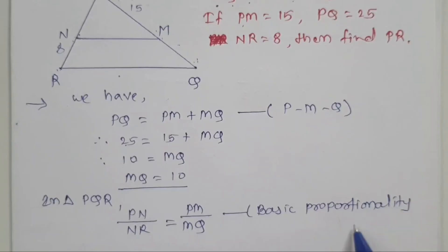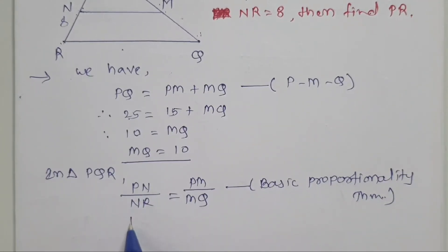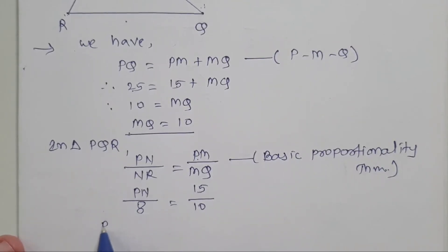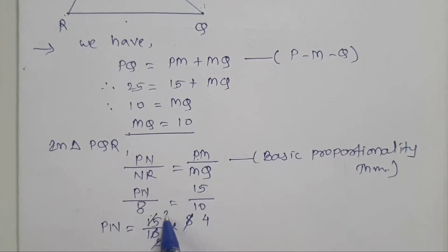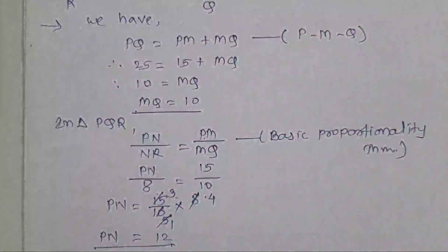By the Basic Proportionality Theorem, PN divided by NR equals PM divided by MQ. Substituting: PN divided by 8 equals 15 divided by 10. Simplifying 15 by 10 gives 3 by 2, then multiplying both sides by 8: PN equals 3 by 2 into 8, which is 3 into 4, that is 12. So the length of PN is 12.